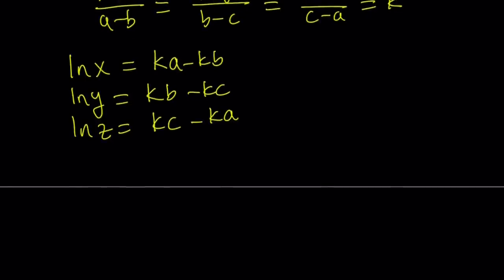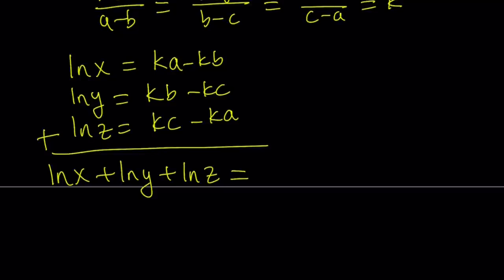And guess what? We're going to go ahead and add these together. You know what? Because we can, first of all, but that's not the main reason. When you add these up, you're going to get something nice. ln x plus ln y plus ln z on the left hand side. And on the right hand side, everything is going to cancel out. Ka minus ka, kb minus kb, kc minus kc. So it's all zero, right? They're just going to cancel out, leaving us with a zero on the right hand side, which is cool. But remember, we are trying to find x, y, z. Not this one.